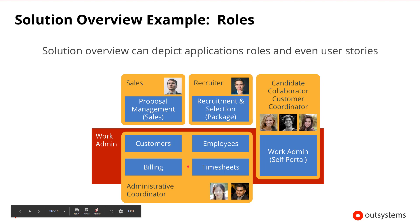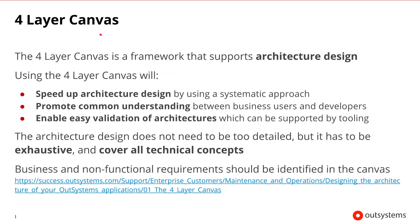Once we've created the solution overview, we can move to the next level of detail, which can be captured on the four-layer canvas. The four-layer canvas is a framework that supports architecture design, allowing us to provide a more detailed architecture design. Using it can speed up architecture design because it gives us a systematic approach. It promotes common understanding between the business and users, and enables easy validation of architectures because there are supporting tools that can help us do the validation.